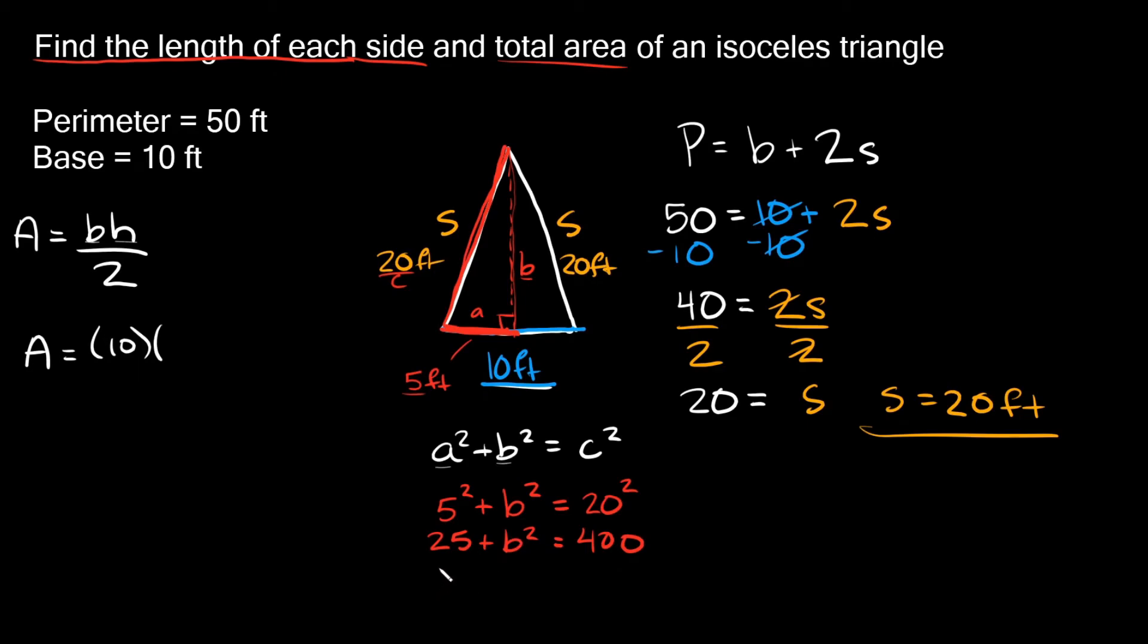So trying to isolate B, we're going to get rid of this 25. So subtract 25 from each side. So then on this side, these 25's cancel out. So we're just left with B squared is equal to 400 minus 25, which is equal to 375. Now in order to get rid of this exponent, the two, we have to take the square root. And what you do to one side of the equation, you do to the other. So then this square root and this square exponent cancel out.